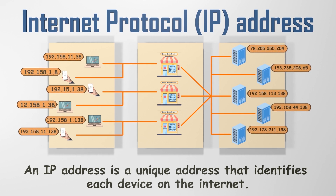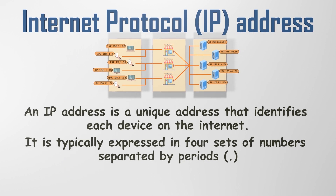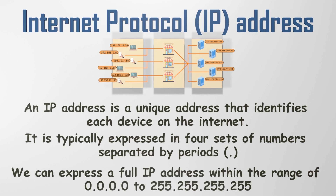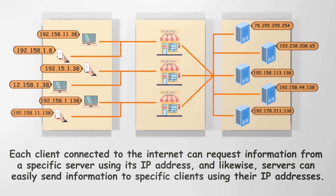An IP address is typically expressed in four sets of numbers separated by periods. Each number in the set falls within the range of 0 to 255. These IP addresses are assigned by the Internet Assigned Numbers Authority. Each client connected to the Internet can request information from a specific server using its IP address, and likewise, servers can easily send information to specific clients using their IP addresses.